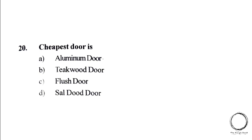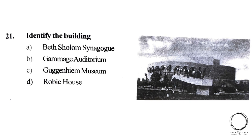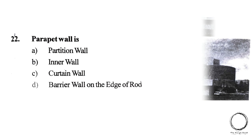The 20th question: The cheapest door is — A) Aluminium door, B) Teak door, C) Flush door, D) Solid door. The answer is C) Flush door. Next question: Looking at the image, identify the building. Options: A) Beth Shalom Synagogue, B) Gamage Auditorium, C) Guggenheim Museum, D) Robie House. The answer is B) Gamage Auditorium.